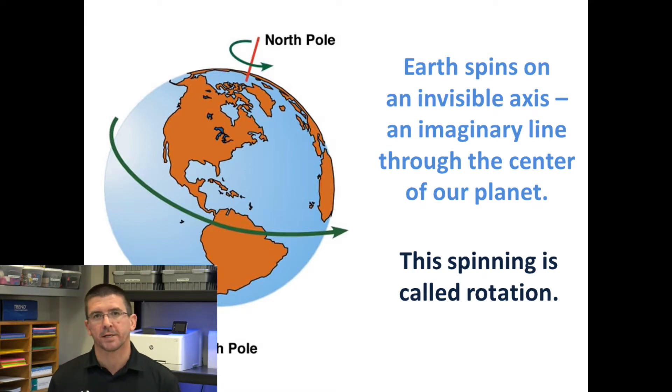So as Earth is sitting, spinning in place, we say it's rotating. And it takes 24 hours for Earth to make one complete rotation.